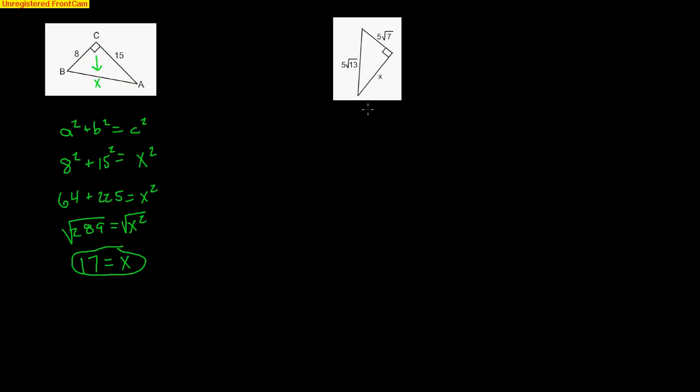We've got some square roots. It makes it a little bit tougher. First thing I notice is who's across from that right triangle? 5 radical 13. So when I do a squared plus b squared equals c squared, I don't really care who's a and b, but I know across from that right angle has to be the c. So I know that 5 radical 13 squared has to go over there. Who's a and who's b? It doesn't really matter. I'll let a be the x that I'm looking for, and I'll let b be the 5 radical 7 squared.